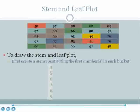The first step in building the stem and leaf plot is to draw the stem. The stem consists of listing the first numbers from lowest to highest in each bucket.